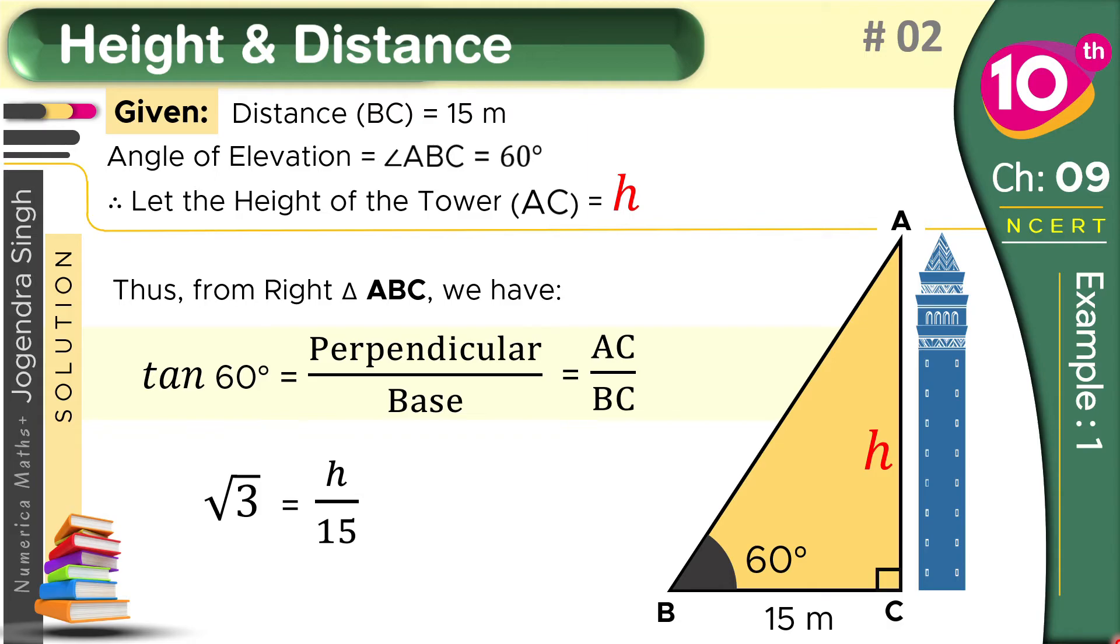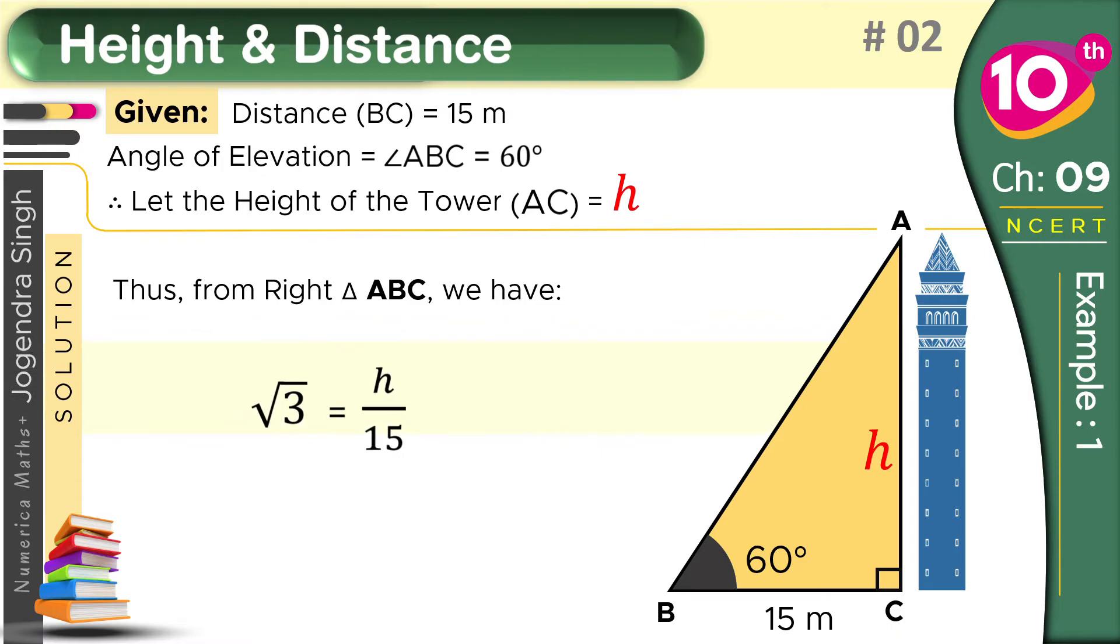Now just wipe out all the extra things from here. And we have root 3 is equal to H over 15. Just transfer 15 to the left side. Then we have 15 root 3 is equal to H. So we got our value. H is equal to 15 root 3 meters.